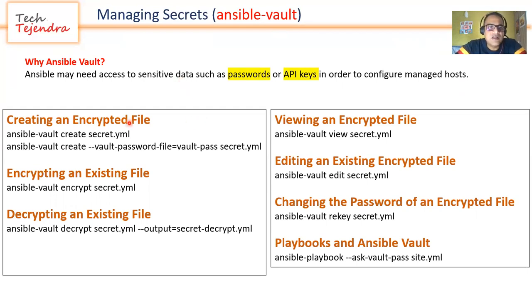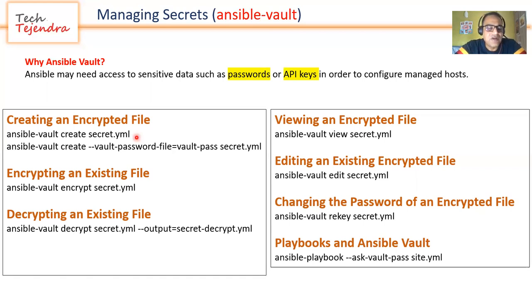Here are some basic commands for Ansible Vault. If we want to create an encrypted file, the command is: ansible-vault create <filename>. As soon as we give this command, Ansible will ask for a password, because every file saved inside Ansible Vault requires a password — it is a password-protected file. But you don't need to remember that password every time; you can save this password in another file.